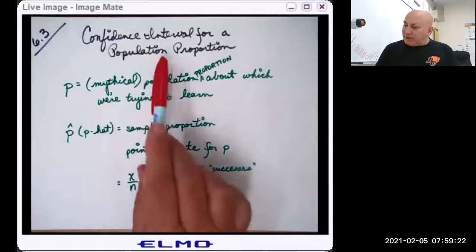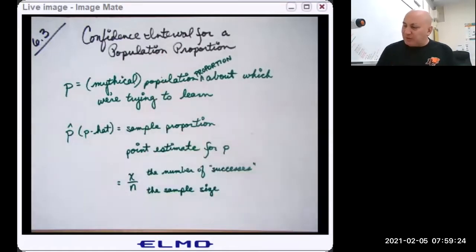Now we're going to learn how to make a confidence interval for a population proportion P. So P, let's learn our variables here, is our, I call it mythical because we don't really know for sure and it changes all the time anyway, population proportion about which we're trying to learn.